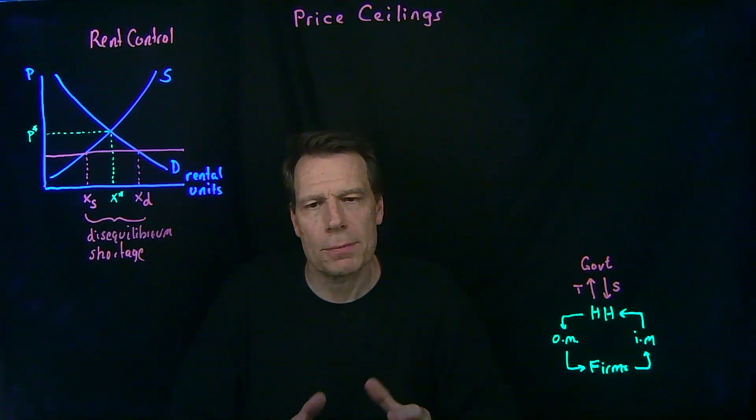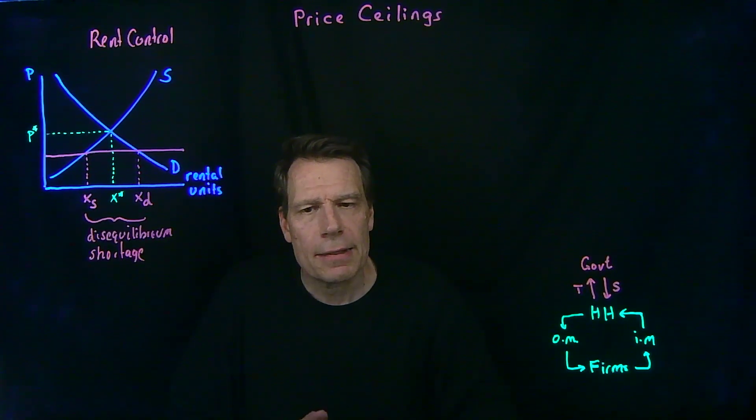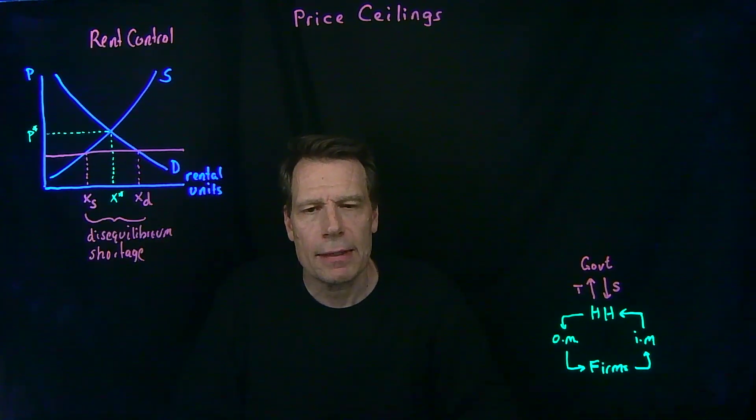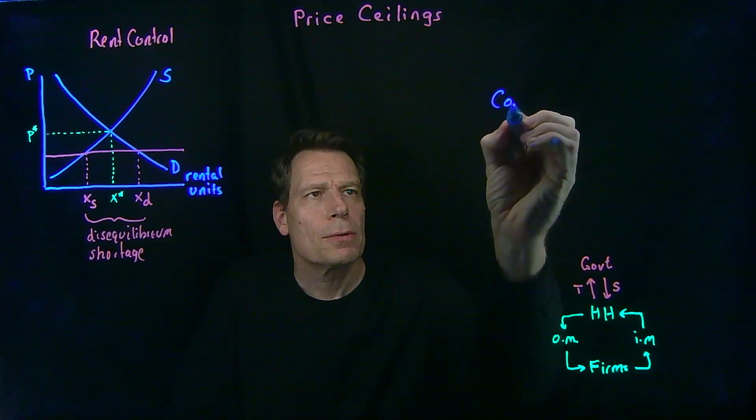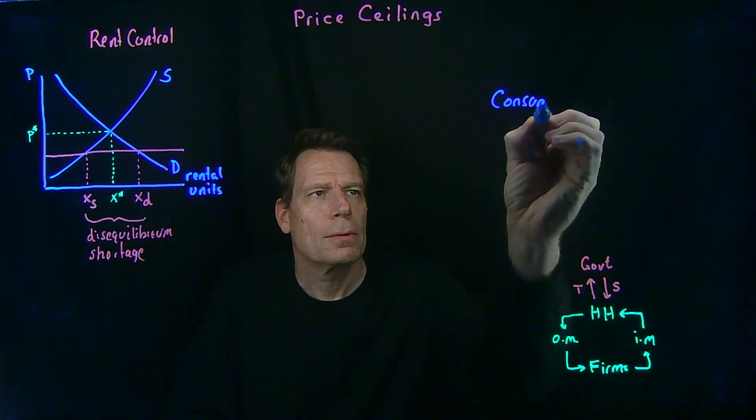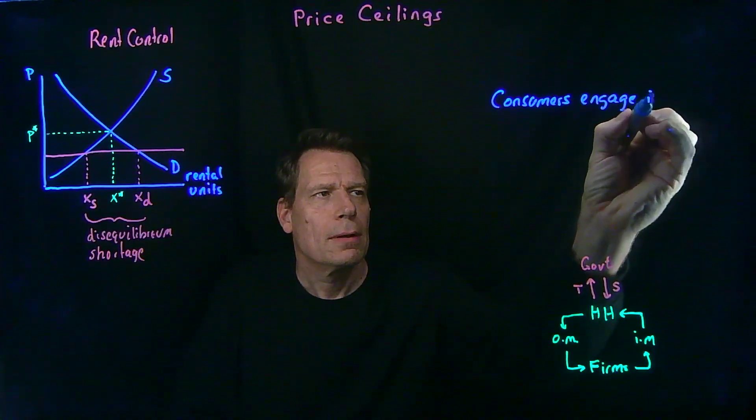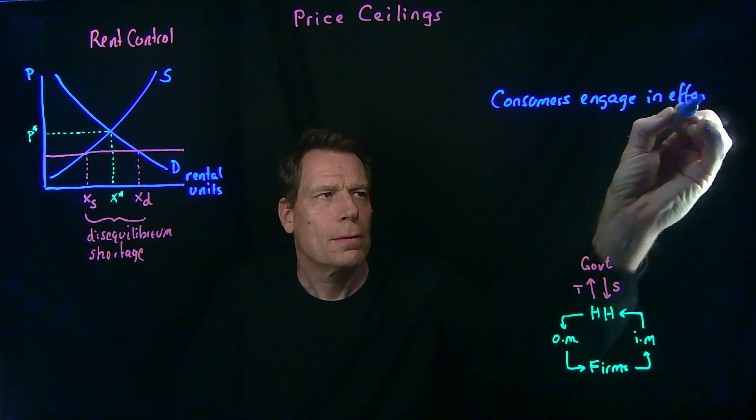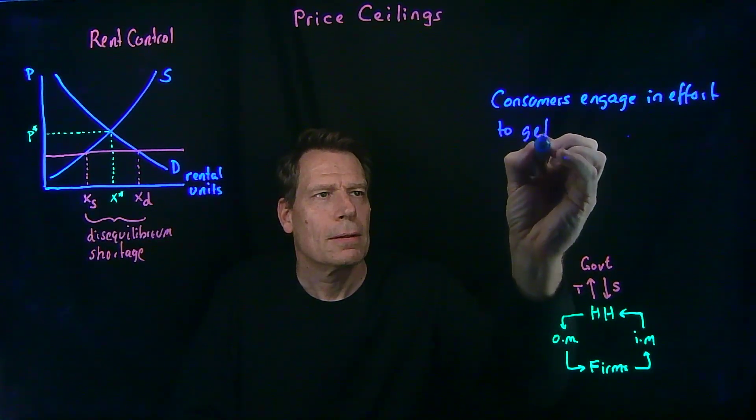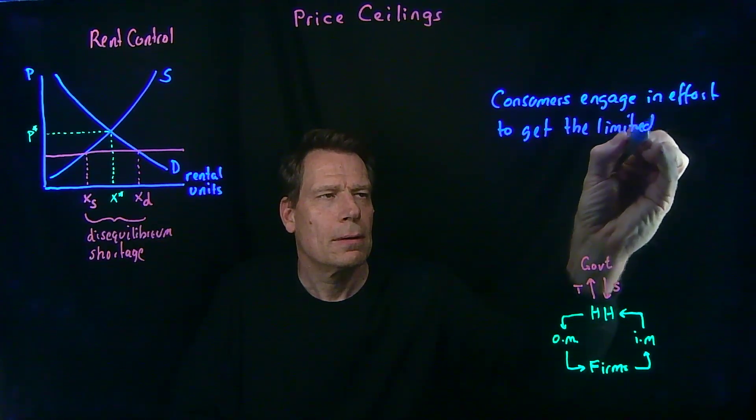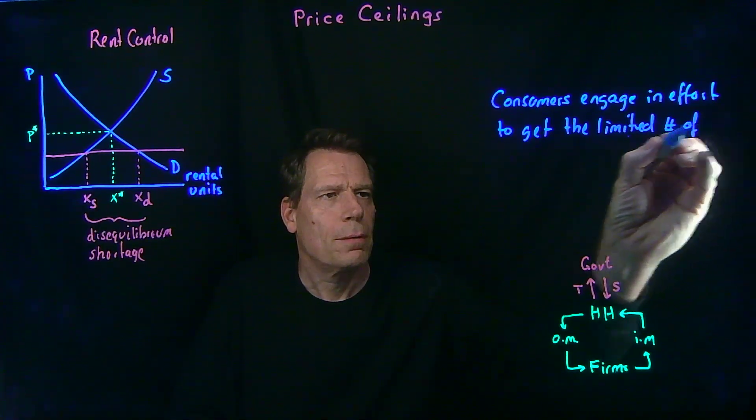So I'm going to call this a disequilibrium shortage. We are not in equilibrium at this point. Something has to happen. Now the most likely thing to happen is that all these consumers who want rental units but can't find any are going to engage in additional effort. So consumers or households will engage in effort to get the limited number of apartments.